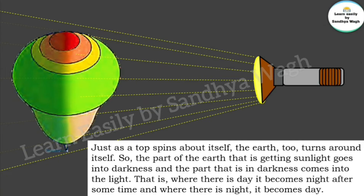So, just as a top spins about itself, the earth too turns around itself. The part of the earth that is getting sunlight goes into darkness, and the part that is in darkness comes into the light. That is where there is day, it becomes night after some time, and where there is night, it becomes day.